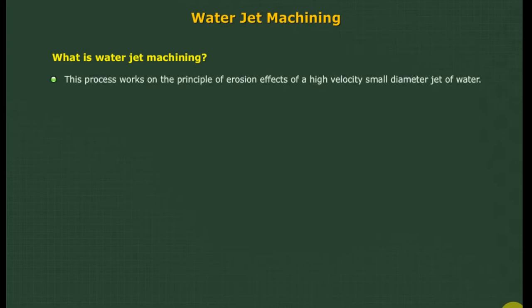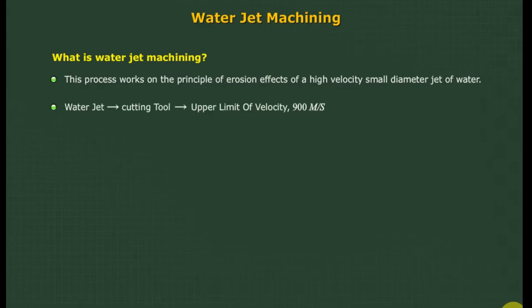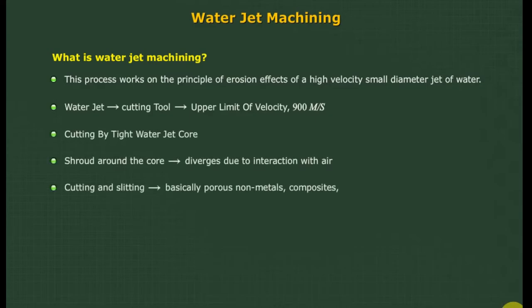Water jet machining (WJM): this process works on the principle of erosion effects of a high-velocity, small-diameter jet of water. The quality of the machined edge obtained is usually superior to other conventional cutting processes. WJM is good for cutting and slitting of porous non-metals like wood, leather, foam, etc., as well as composites, wire stripping, and deburring. The water jet is a cutting tool that never dulls or breaks. The process does not generate airborne dust, hence hazards during machining of fiber composites and asbestos are minimized. The jet velocity may be as high as 900 meters per second, and basic cutting action is performed by the tight water jet core.